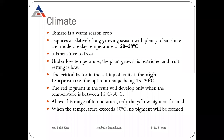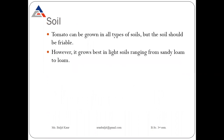Temperature plays an important role in the development of red pigment (lycopene) in tomatoes. The best red color develops in the range of 15 to 30 degrees Celsius. When temperature exceeds 30 degrees Celsius only yellow pigment forms, and when temperature exceeds 40 degrees Celsius there will be no pigment formation at all.